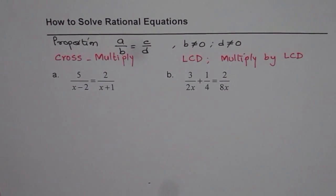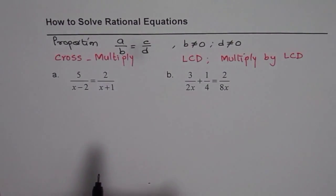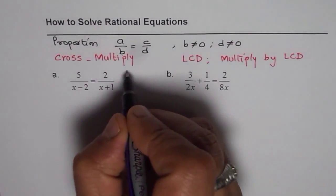That is the first part. The second part is, before even solving any rational equation, write down restrictions.